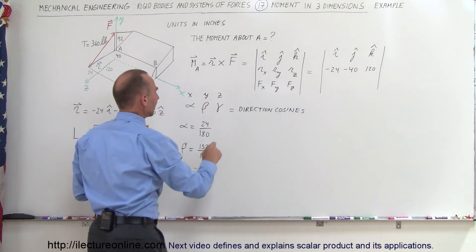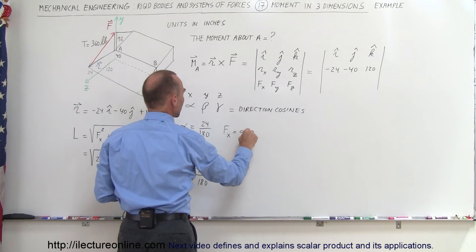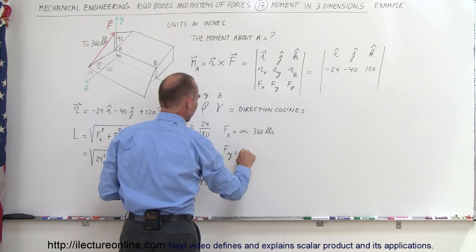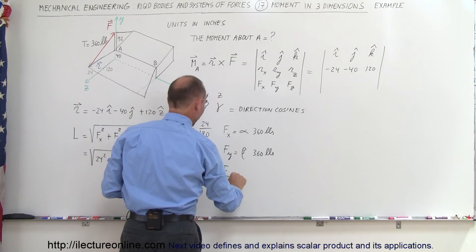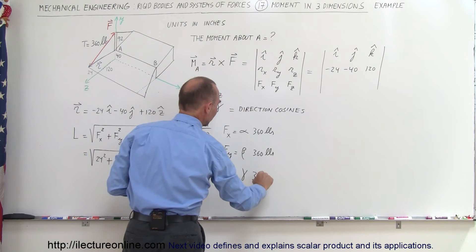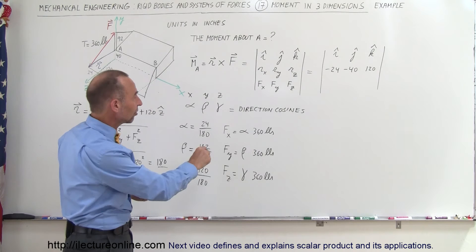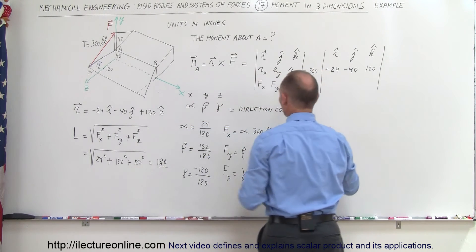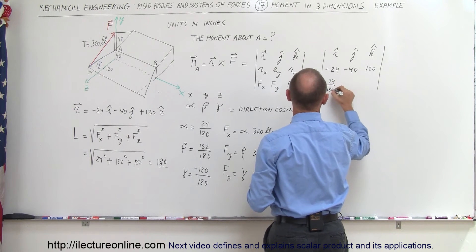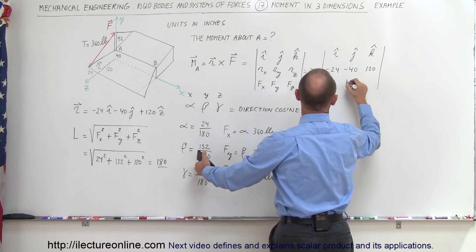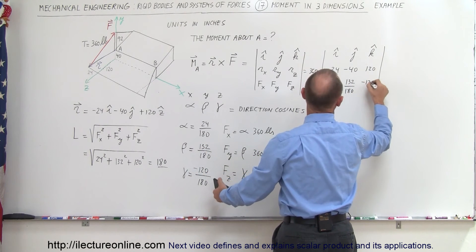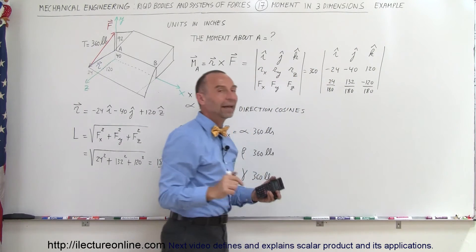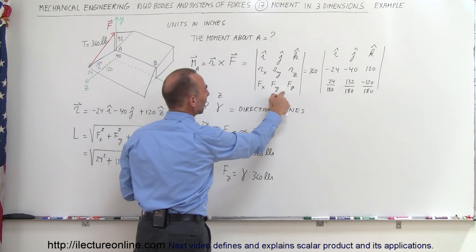Multiplying the direction cosines by the 360-pound magnitude, the force vector F equals 360 times the quantity: 24 over 180 in the I direction, plus 132 over 180 in the J direction, minus 120 over 180 in the K direction. This gives us the values for F sub X, F sub Y, and F sub Z.